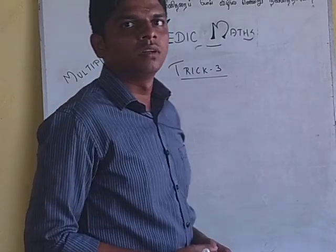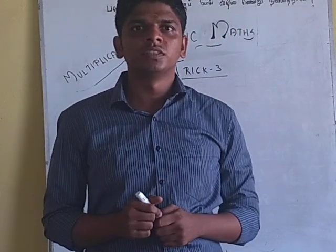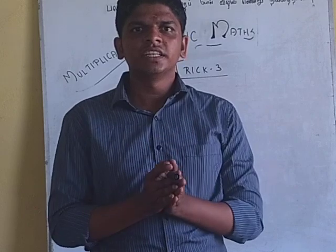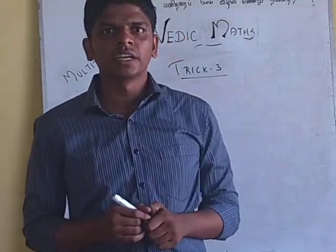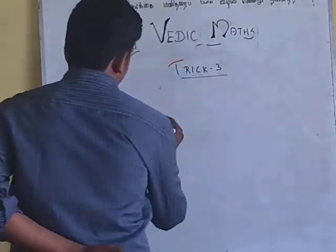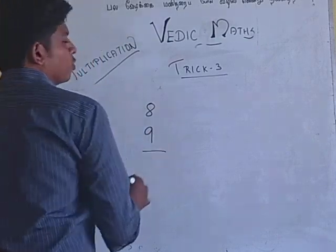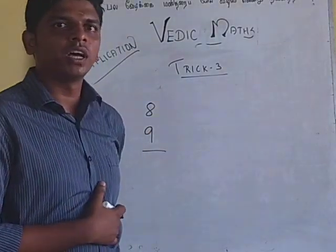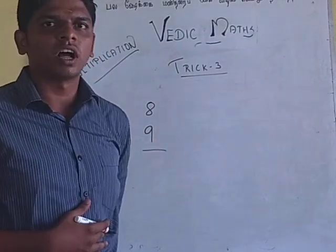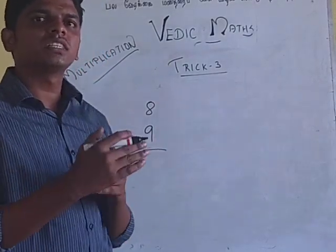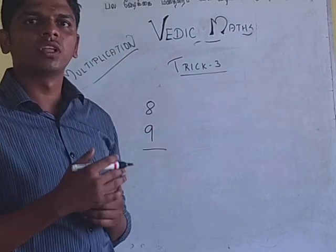Now, we will see the third trick in multiplication. How do we do the basis? For example, 8, 9. If we multiply two numbers, this is the single digit we already know. If we do the basis, we will go through two digits or three digits.